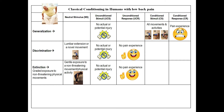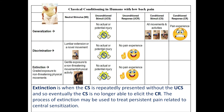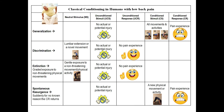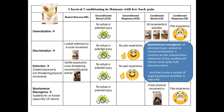Extinction is graded exposure to non-threatening physical movements. When the neutral stimulus is a gentle exposure to non-threatening movements or physical activity in the absence of a UCS — no actual or potential injury — no pain experience occurs. Extinction is when the CS is repeatedly presented without the UCS, and so eventually the CS is no longer able to elicit the CR. The process of extinction may be used to treat persistent pain related to central sensitization.